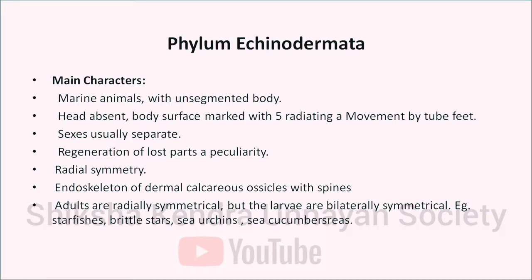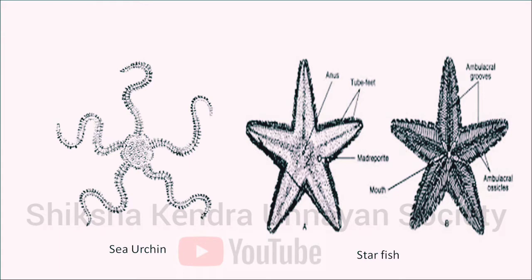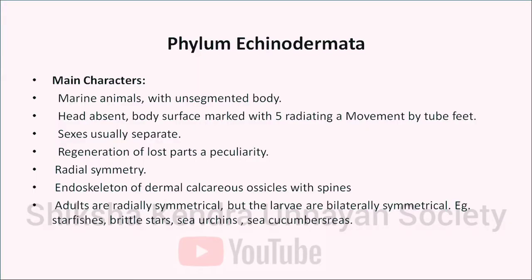The next phylum is phylum Echinodermata, which includes starfish, brittle star, sea urchin and sea cucumber. All are marine animals with unsegmented body. Head is absent. Body surface is marked with five radiating areas. They have radial symmetry. Endoskeleton of dermal ossicles with spines is present. They move by tube feet. Sexes are usually separate. Regeneration of lost parts is a peculiarity. Adults are radially symmetrical but larvae are bilaterally symmetrical.